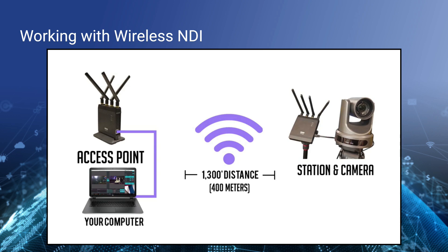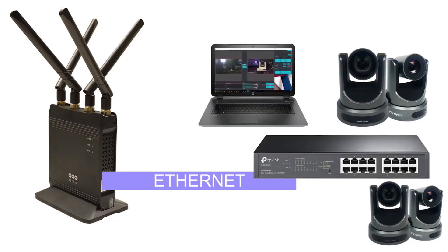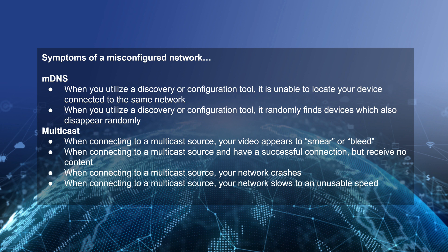The nice thing about NDI as opposed to wireless HDMI or wireless SDI is that Ethernet provides control capabilities and all the other things NDI allows for. By connecting a wireless cable directly to your network through a network switch, you can enable the second wireless cable to go up to 400 meters away to capture NDI video connectivity.